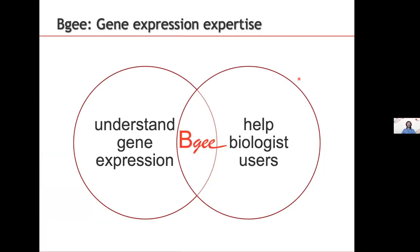What does BG do? Our goal is to help biologist users understand gene expression. Gene expression is a complex trait with many aspects, especially in multicellular organisms like animals. We want to make it easier for people to understand and use gene expression, helping biologists — whether experimental or computational — have the easiest access to this information.